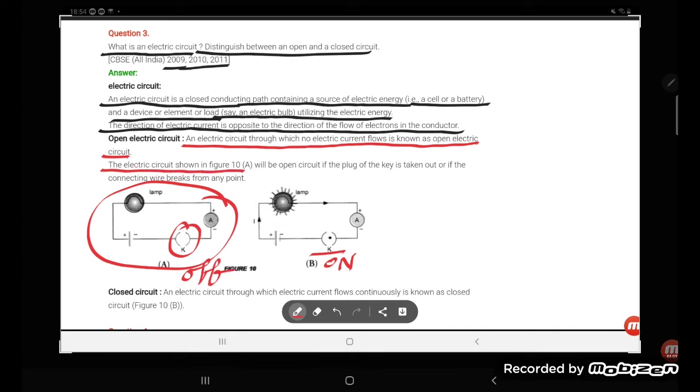The electric circuit shown in figure 10a will be an open circuit if the plug or the key is taken out or if the connecting wire breaks from any point. A closed circuit is an electric circuit through which electric current flows continuously.